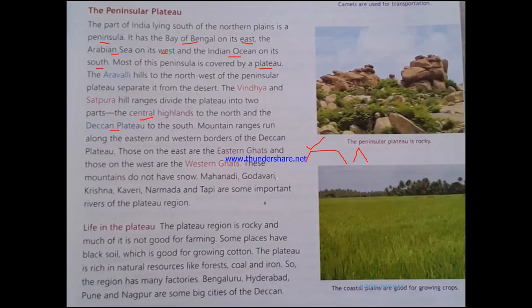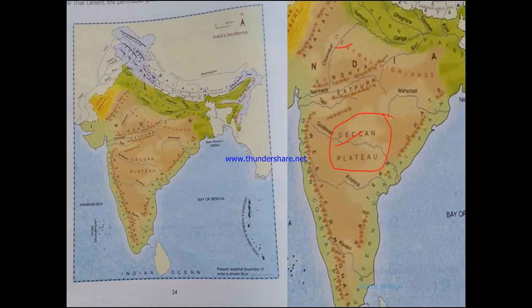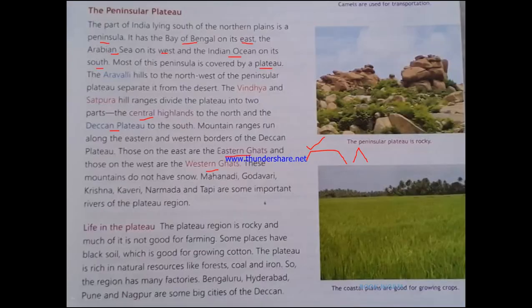On the east side we have the Eastern Ghats — the small triangles on the map represent hills or mountains showing the Eastern Ghats — and on the west side we have the Western Ghats. The rivers of the plateau region are Mahanadi, Godavari, Krishna, Kaveri, Narmada, and Tapti.